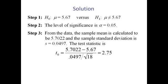And so when we plug these values into the formula for our test statistic t sub 0, we get t sub 0 equals 2.75.